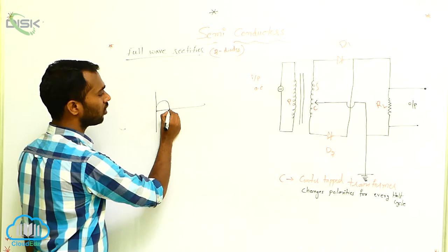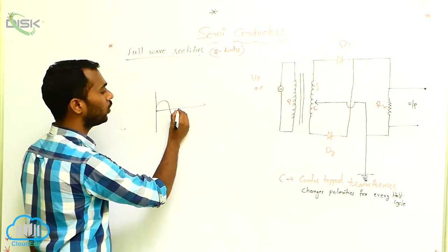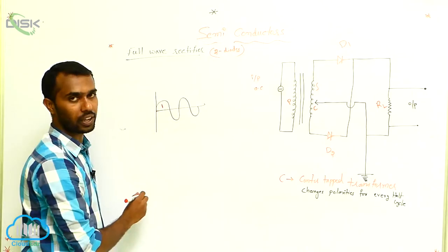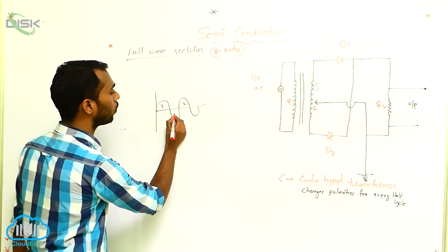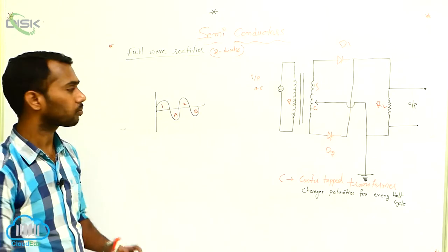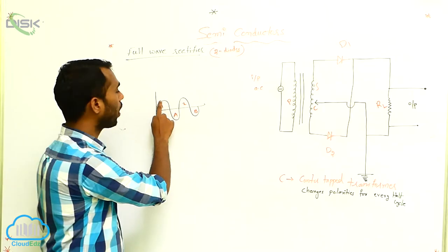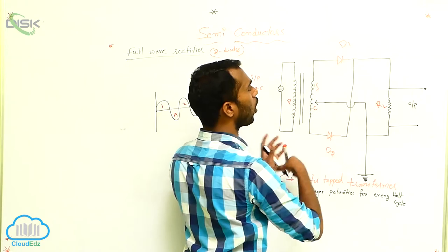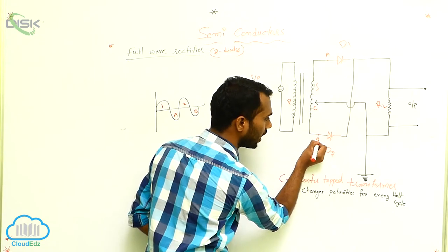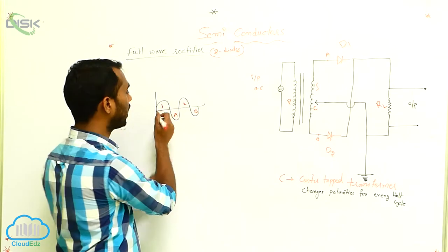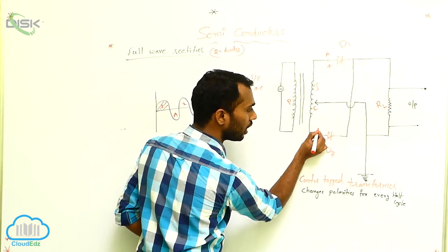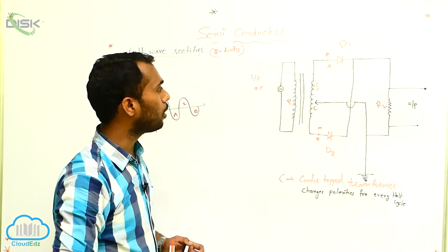See here — I am taking an AC current. This is a positive half cycle and this is a negative half cycle. Let's give some names: first positive half cycle, second positive half cycle, A negative half cycle, B negative half cycle. For the first positive half cycle, take this point as A and this point as B. In this region, A is in positive polarity and B is in negative polarity.